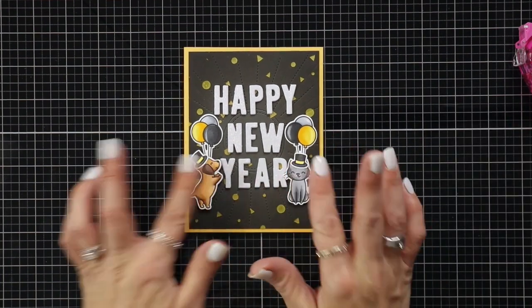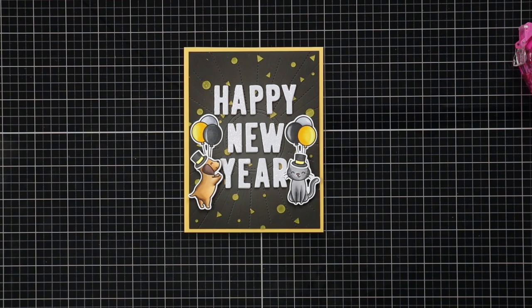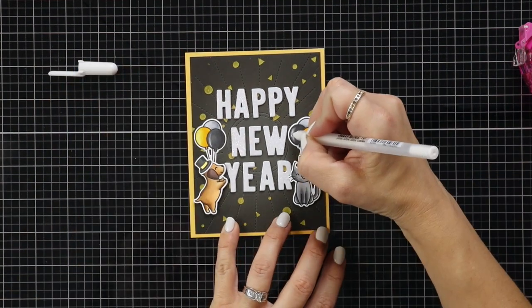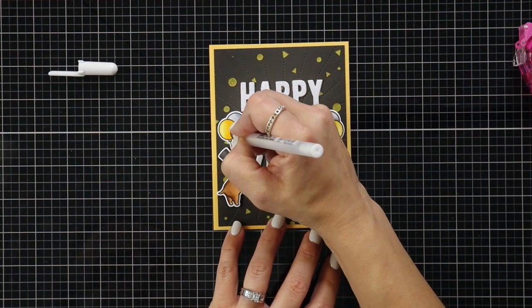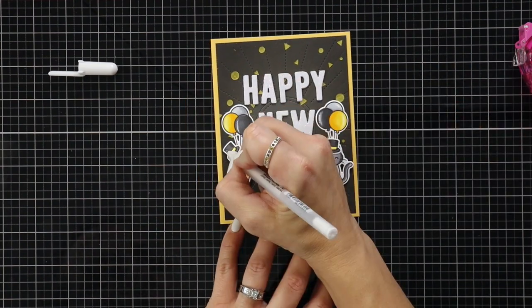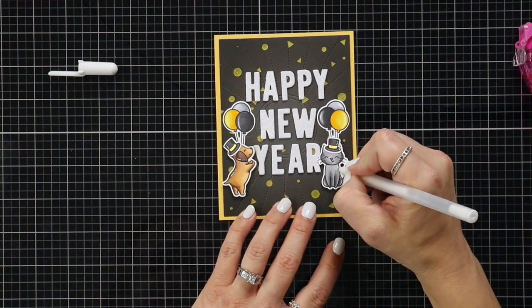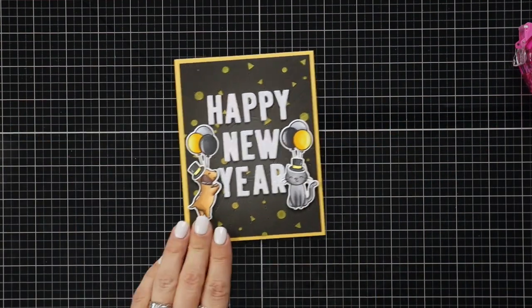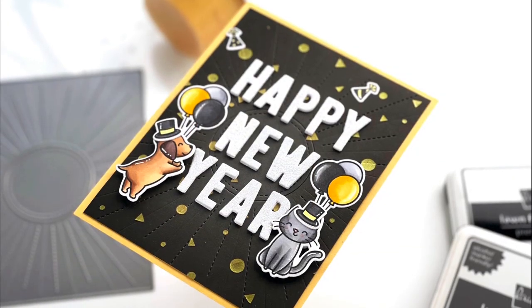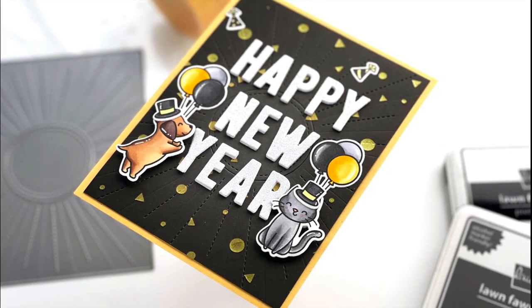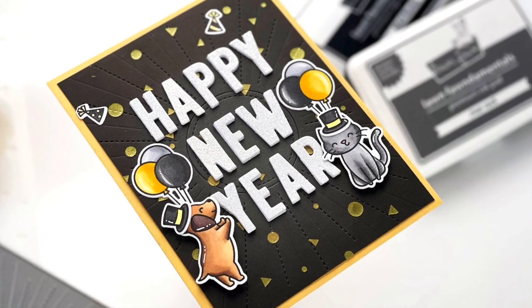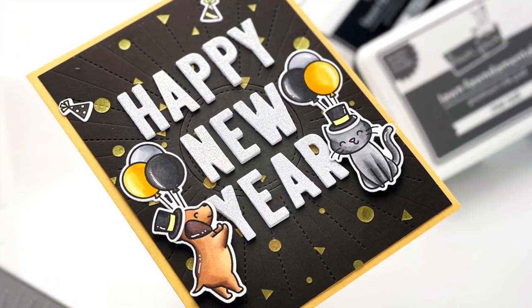So here I just added the critters with some foam squares to pop them up so they have those balloons behind them. And one last thing I decided to do was bring in the white jelly roll pen and just add some highlighting details to the balloons and the critters. So this was a lot of fun to create and I hope this gives you some ideas with these stencils and the stencil paste. Thank you so much for joining me today and I'll see you again soon. Happy New Year!